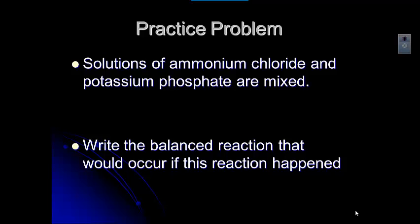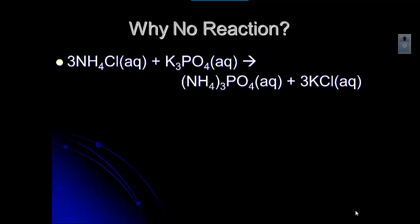In this last video, we need to take a look at one more issue. Go ahead and pause the video and write the full balanced reaction for solutions of ammonium chloride and potassium phosphate being mixed. And then we're going to take a look at what happens. When you write this reaction, it's a no reaction — it has two aqueous products — and we want to talk about why we say that no reaction occurs.